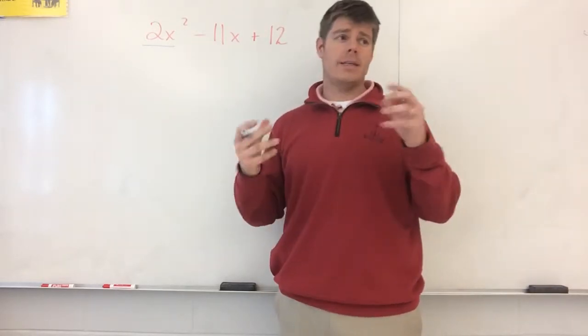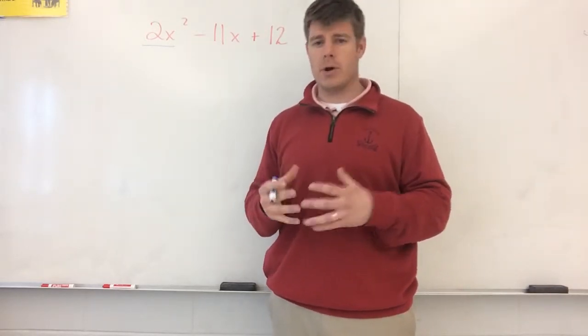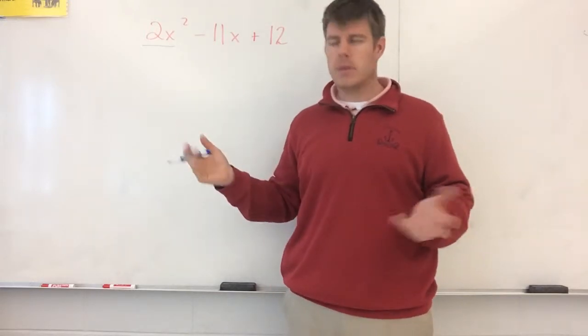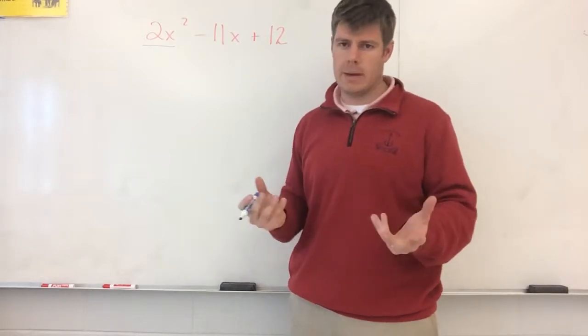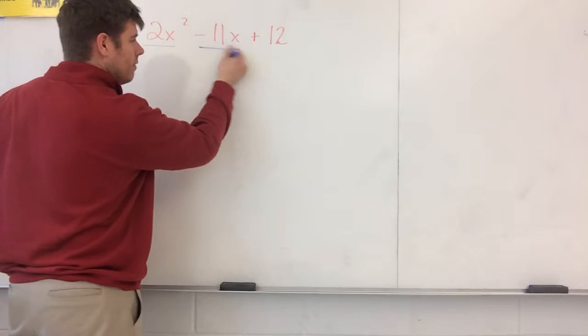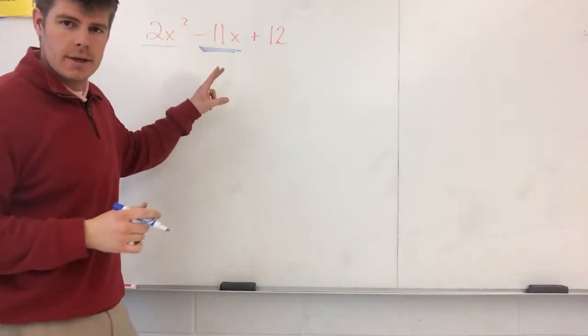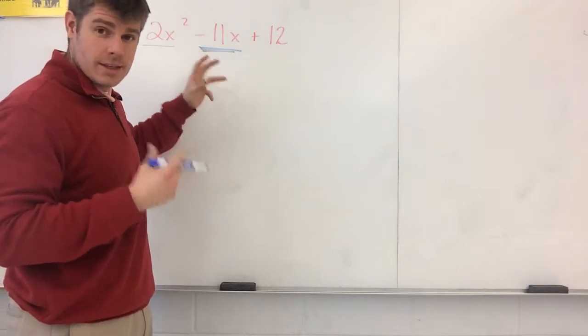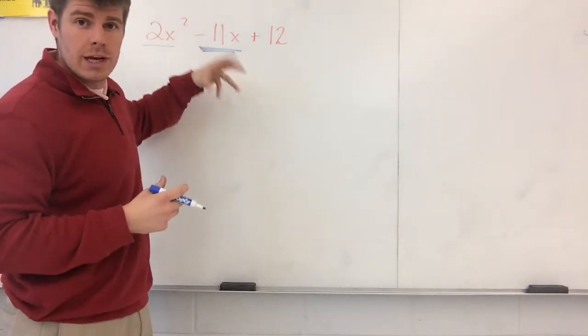And what we do from there is that we then look at those factors and determine what were the two things that we combined to make negative 11. So that's what we're going to do, just going to organize it in the grid to maybe help you. So what I hope you understand is that when we first have this trinomial, it is the product or written as a sum of a binomial times a binomial.